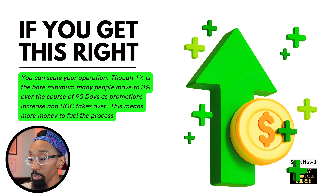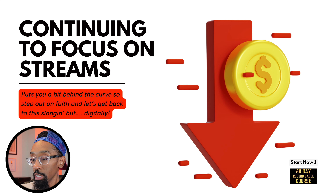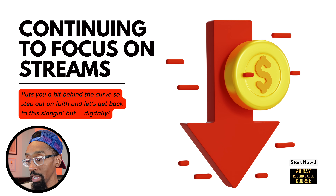Now let's talk about your upside: if you get this right, you can scale your operation. One percent is the bare minimum — people move to 3% over the course of 90 days as promotions increase and user-generated content takes over. That means more money to fuel the process. The downside: continuing to focus on streams alone puts you behind the curve. So step out on faith and let's get back to selling — but digitally. Move your focus about 20% more over to direct-to-consumer platforms.